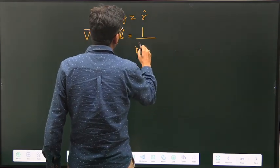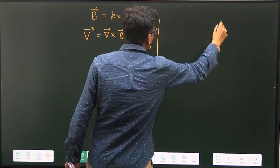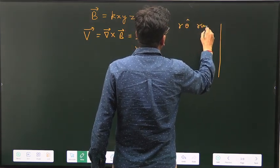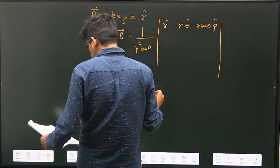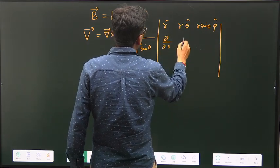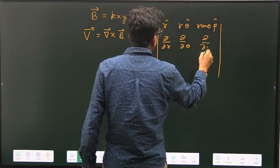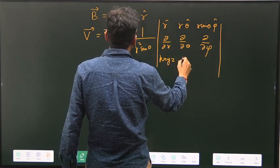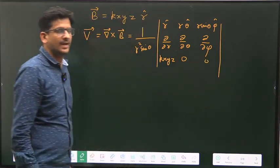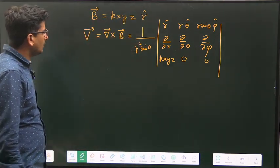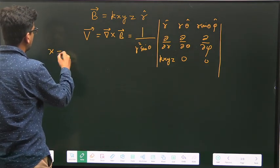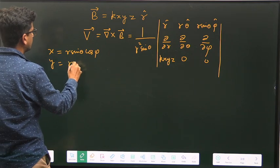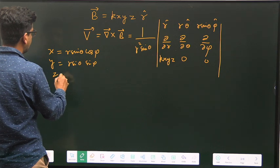And then del by del R, del by del theta, del by del phi, and the R component position is K X Y Z. And then this we have to calculate. So you know in spherical polar coordinates, X will become R sine theta cosine phi.